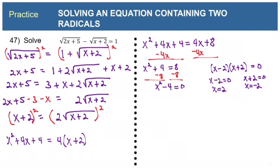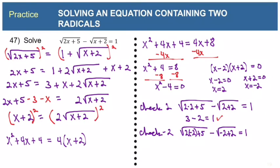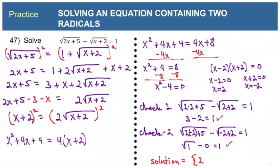We need to check both solutions in the original equation. Checking x equals 2: 2 times 2 is 4, 4 plus 5 is 9, the square root of 9 is 3. Then 2 plus 2 is 4, the square root of 4 is 2. And 3 minus 2 really is 1 — that one checks. Checking x equals negative 2: 2 times negative 2 is negative 4, negative 4 plus 5 is 1, the square root of 1 is 1. Then negative 2 plus 2 is 0, so the square root of 0 is 0. And 1 minus 0 is 1 — this one also checks. So we have two solutions: 2 and negative 2.